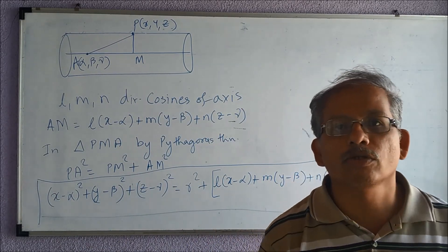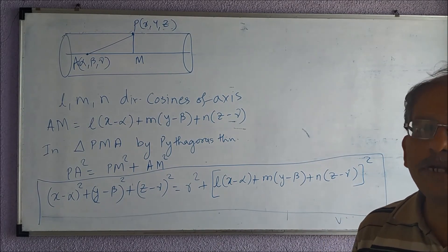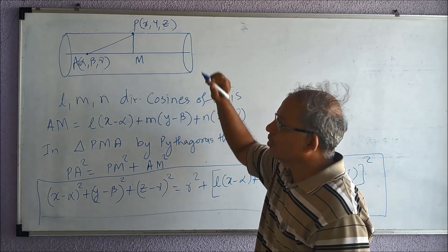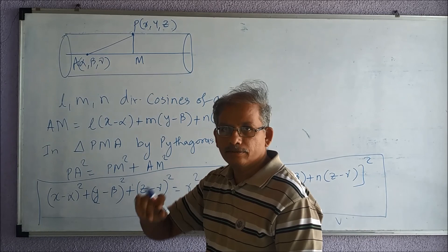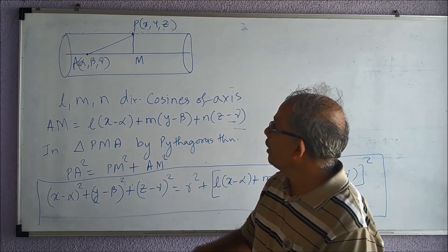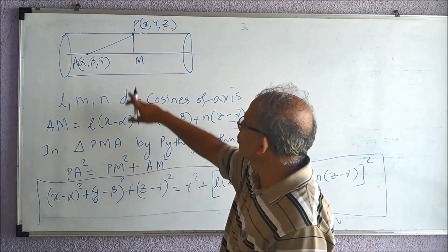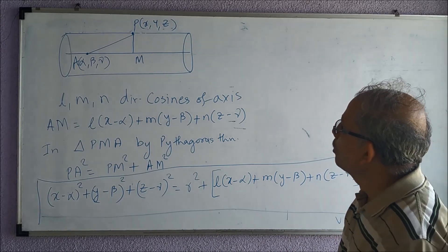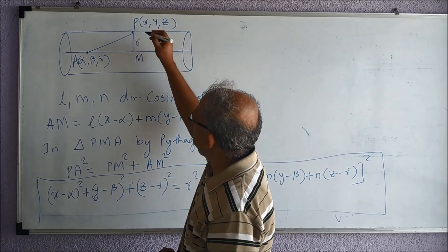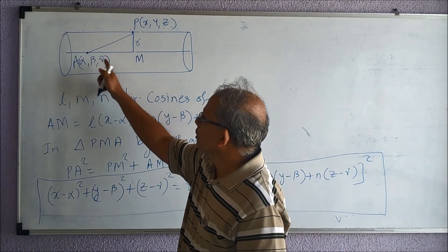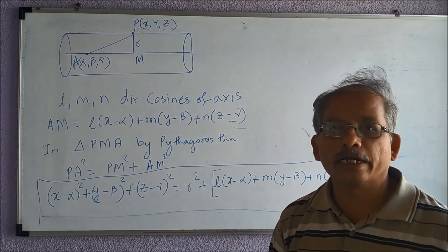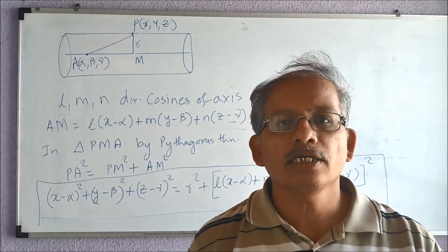Let us recap: we started with the axis whose equation gave us direction ratios and a point on the axis. We took a point P(x, y, z) on the generator and observed right triangle PMA, where M is the foot of the perpendicular from P to the axis. PM equals the base radius r, AM is the projection, and applying Pythagoras theorem gives the equation of the right circular cylinder. We will see illustrations in the next video.